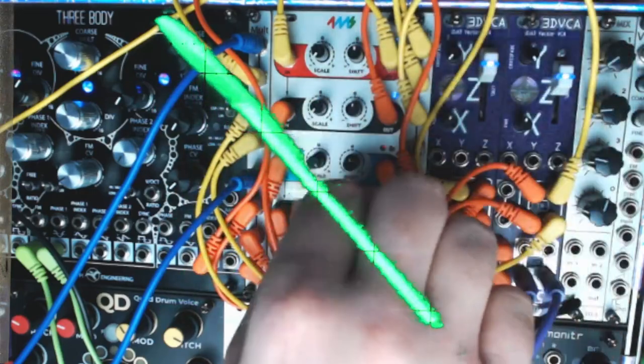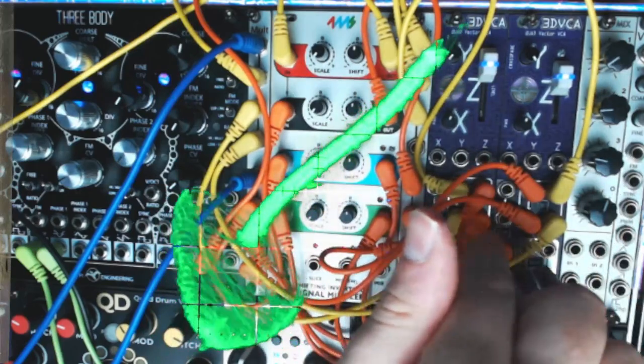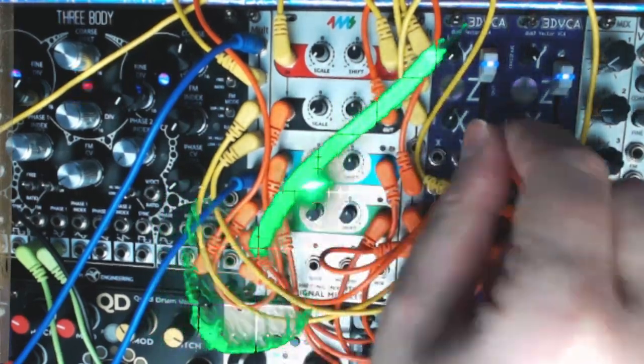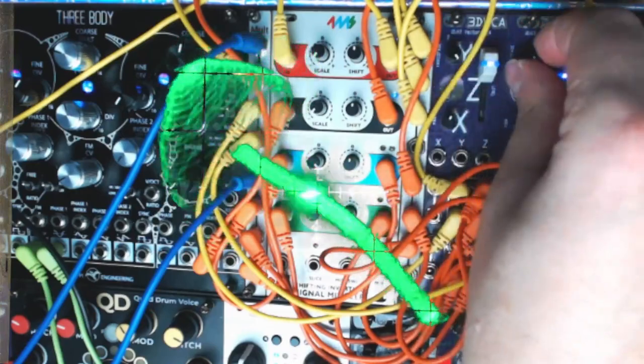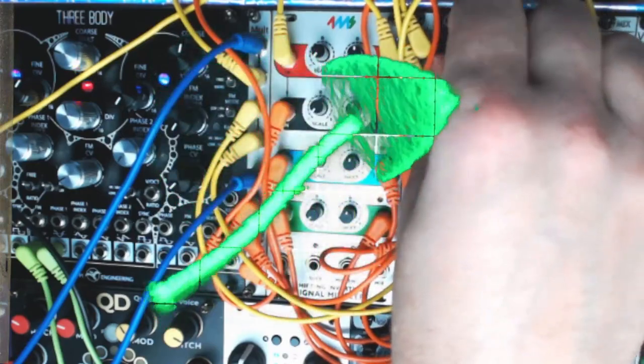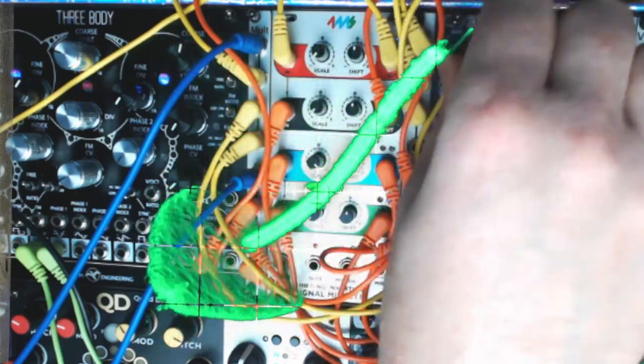And for some math reasons that I don't really feel like explaining, this is because we need to invert one of the XY channels going between our first and second 3DVCA. So now if I tweak the Y controls you can see that we are able to hit all four diagonal angles.